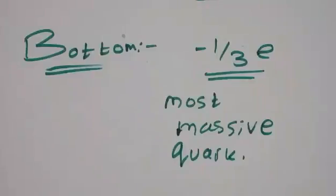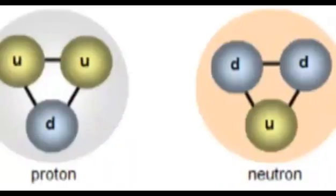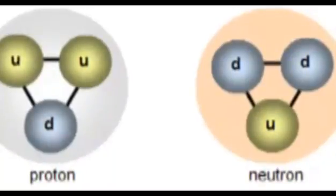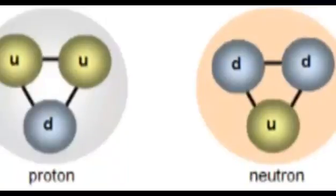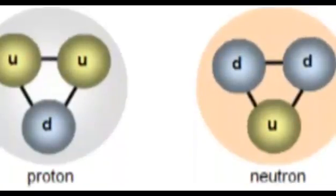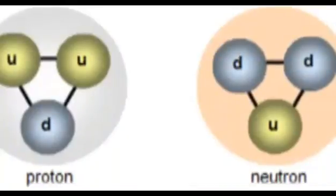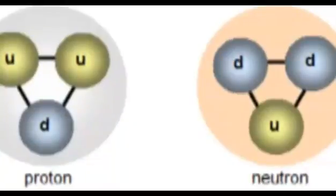Now I want to show you an interesting photo that will help you understand protons and neutrons. You can see the proton consists of two up quarks and one down quark. Since the up quark has a charge of +2/3 and the down quark has -1/3, the proton is positive.